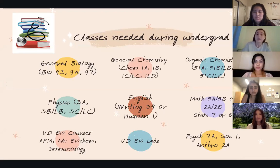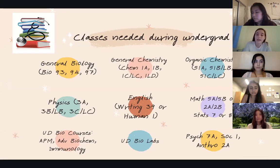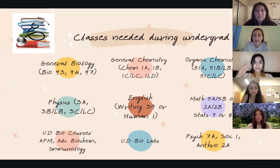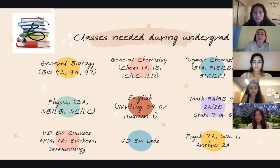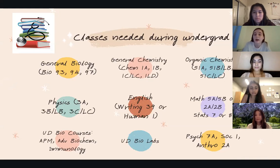During your undergrad years, you'll need to take the general bio series — Bio 93, 94, 97 — and general chemistry: Chem 1A, 1B, 1C, the lab for 1C, and the 1LD lab. You'll also need organic chemistry: 51A, 51BLB, 51C, and 51LC; the physics 3 series or physics 7 series; your English requirements — either the Writing 39 series or Chem Core; and math 5A and 5B if you're a bio major, or 2A and 2B if you're a social science major, plus Stats 7 or 8.